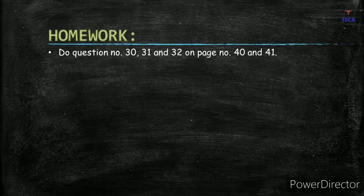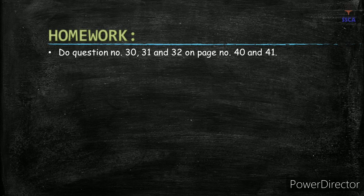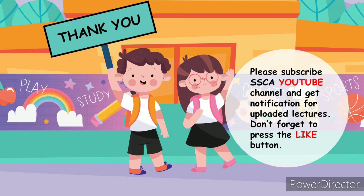Your homework is to do questions number 30, 31, and 32, available on pages 40 and 41. Remember that in questions 31 and 32, equation balancing is mentioned, but you do not need to do the equation balance yet — that will be covered in the next topic. Just identify which type of reaction is given. Thank you, students. Please subscribe to the SACA YouTube channel and press the like button. Take care of yourself and your family. Allah Hafiz.